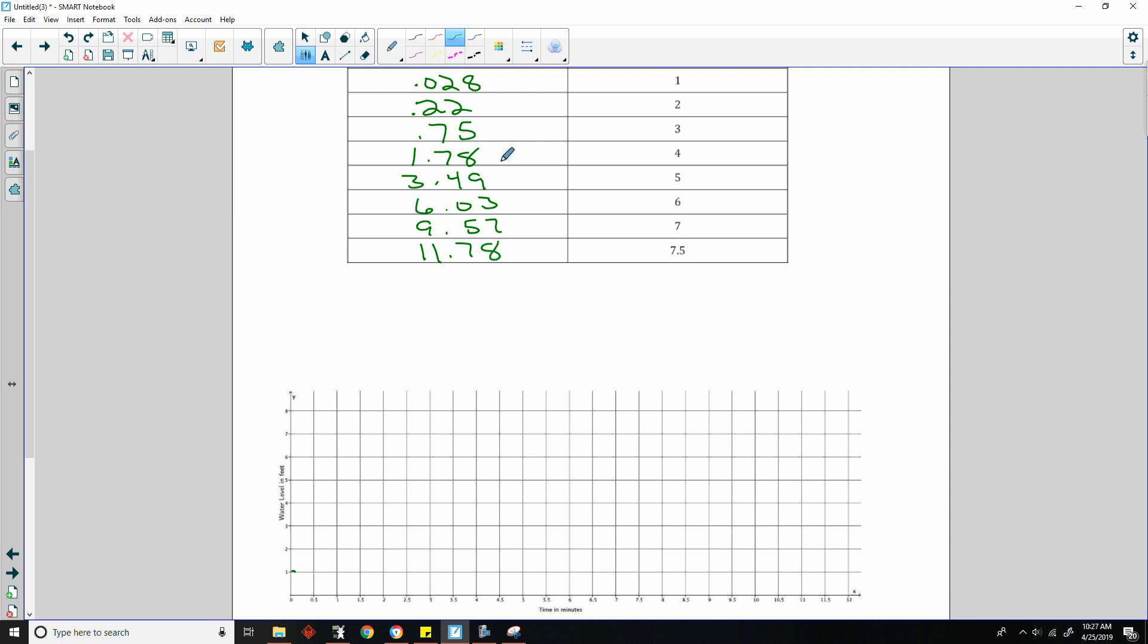And then .22 is almost a half, but not quite. And that was at 2. So that's right here. And then 3 quarters at 3. So .5 is here. .75 would be halfway between .5 and 1. So that would be right there. And then we had 4 being at the 1.78 mark, which is a little bit more than halfway between 1.5 and 2. So I would put it like right here. And then 3.49 is really close to 3.5 for 5. Just a smidgen to the left.